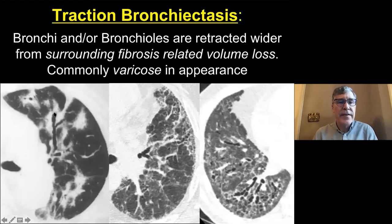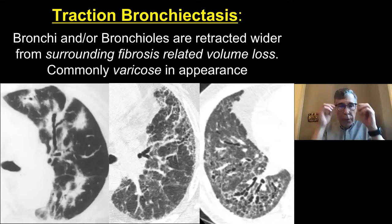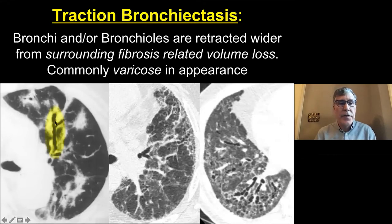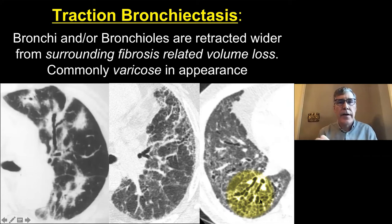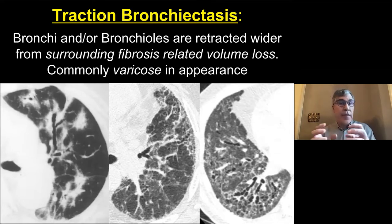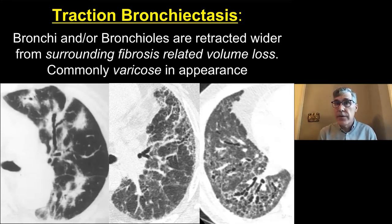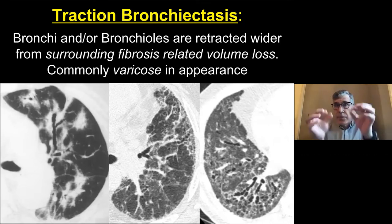Traction bronchiectasis can be seen with any cause of scarring or fibrosis. This patient has cryptogenic organizing pneumonia with chronic consolidation — you can see how the airways are being pulled apart. Being pulled apart by the reticular opacities — that's traction bronchiectasis, a very good sign of underlying fibrosis. It's not an airway problem; the airways just get pulled apart. Traction bronchiectasis is almost always varicose in appearance because of the different attachments being pulled apart.